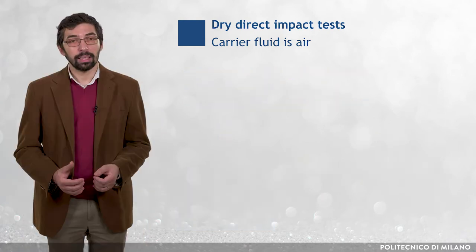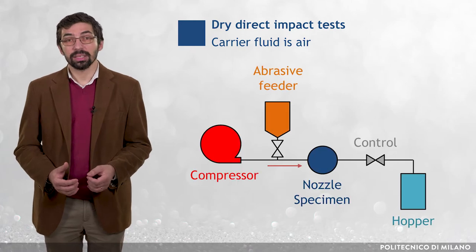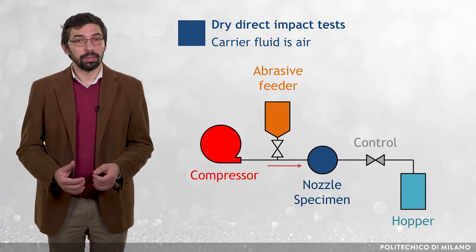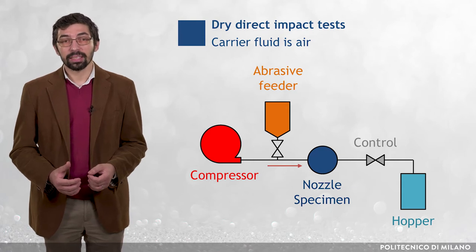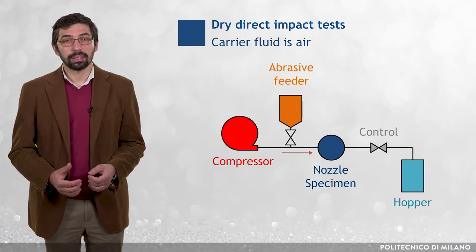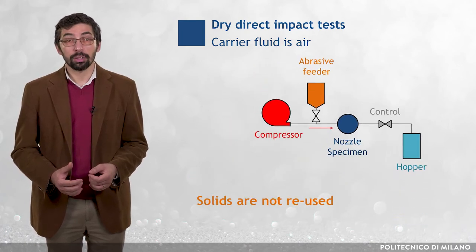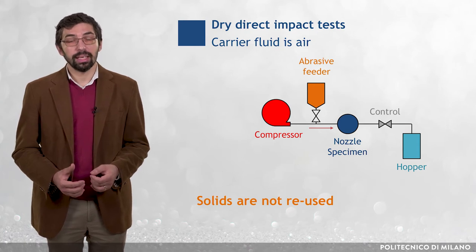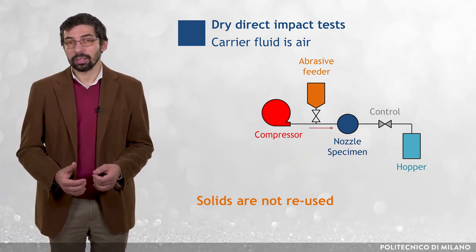Dry direct impact tests are usually performed in open setups, in which an air flow is generated through a compressor and the solids are introduced from a feeder by suction pressure. After the test, the solids are collected in a hopper and not reused. As we will see later, this is a very important aspect to consider.